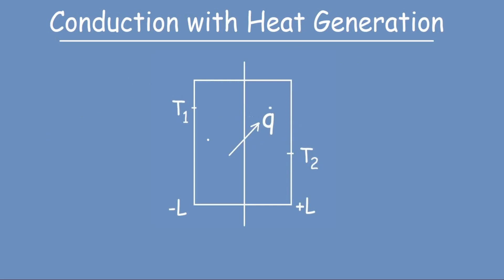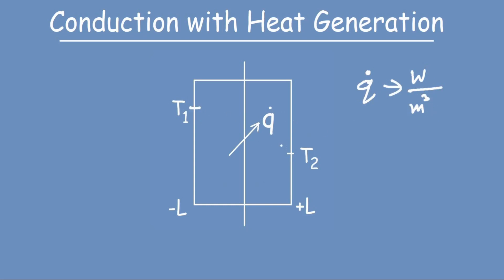This is the problem that we have — a conducting slab where q_dot is the heat generated per unit volume, with dimensions of watts per meter cube. The walls are at temperatures T1 and T2, and this is the x-axis ranging from negative L to positive L.